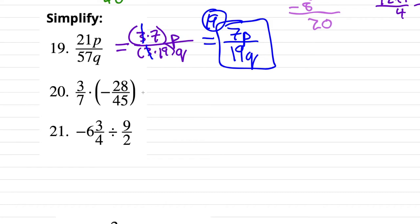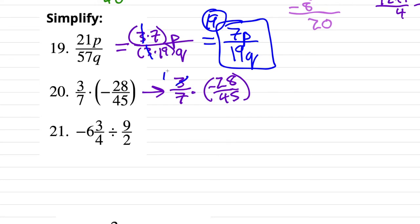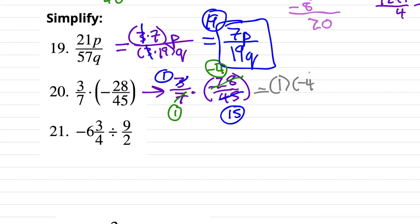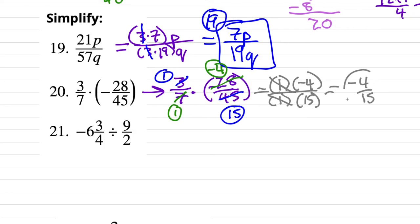Number 20: multiply 3/7 times negative 28/45. We can cross cancel: 3 goes into 3 once and into 45 fifteen times. 7 goes into 7 once and into negative 28 negative 4 times. Rewriting: 1 times negative 4 over 1 times 15, which is negative 4/15.